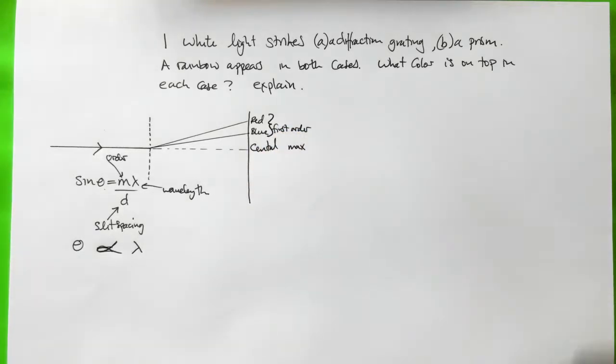So these are both in the first order, so we see that in this case red would be on the top in the rainbow produced by a diffraction grating.